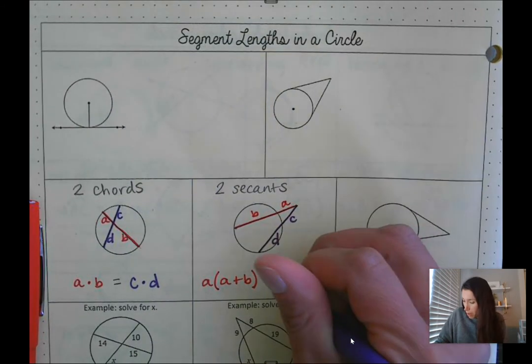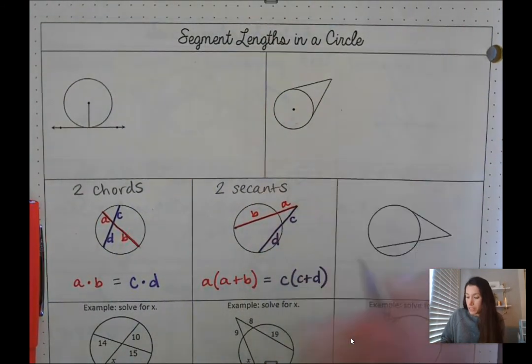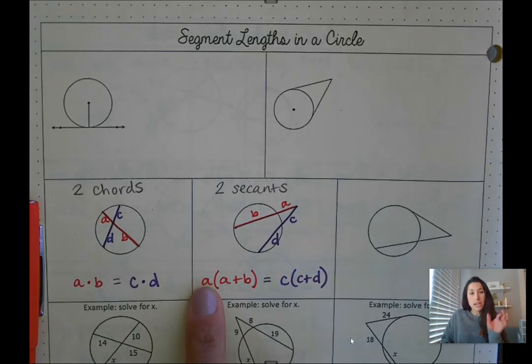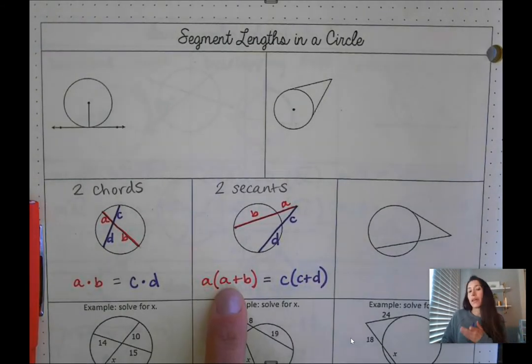We always take the outside piece or the outside section of that secant. We call that the external secant and then we multiply it by the entire length of that line.